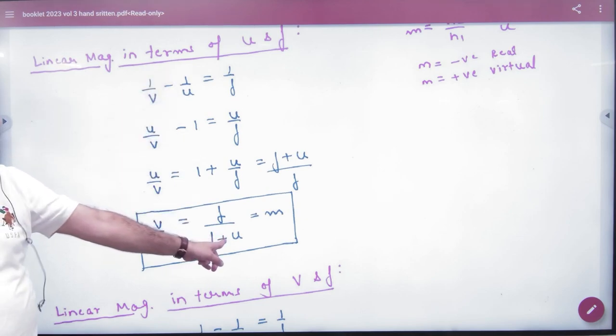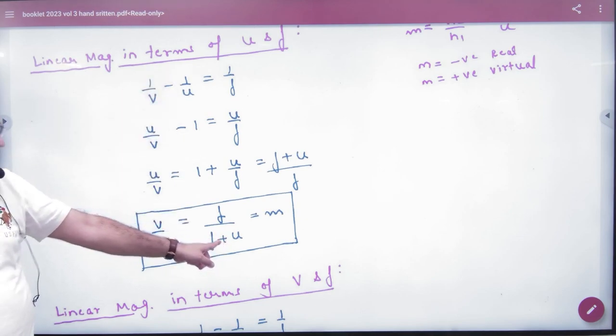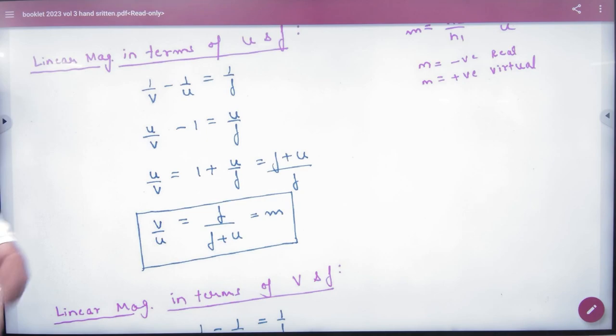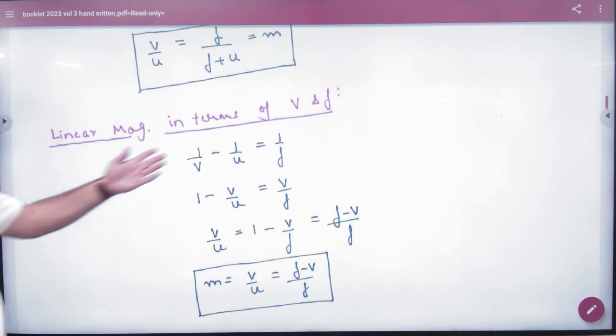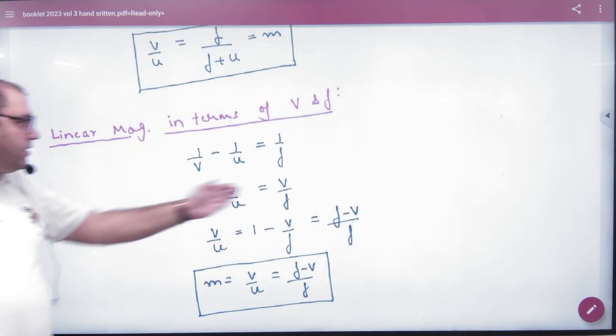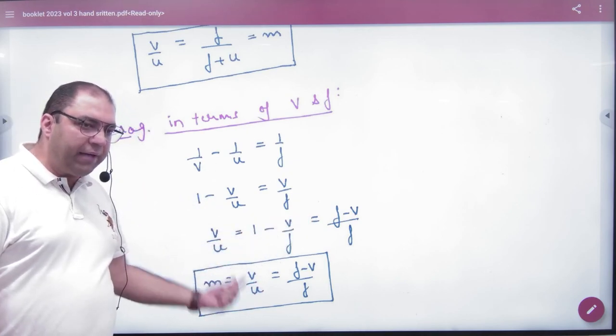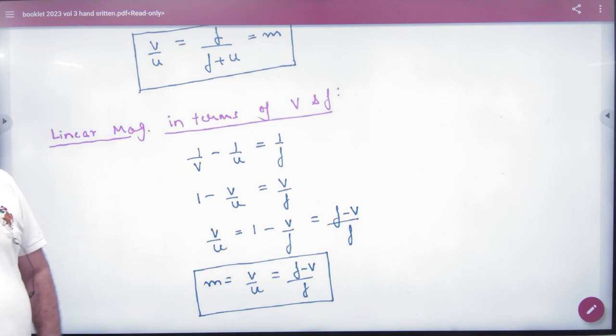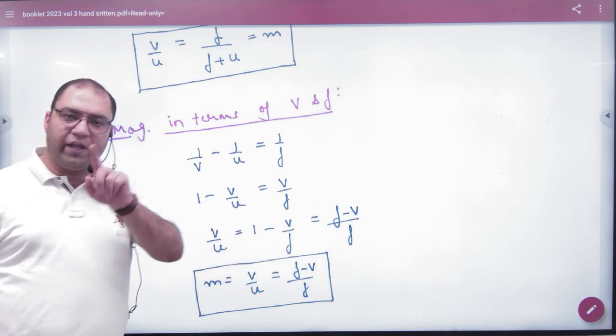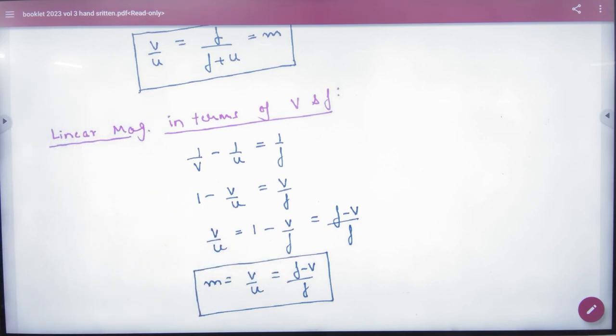So that formula, magnification is F upon F plus U. In that way, another shortcut is that if you write the lens formula, this time you multiply both sides by V. So V by U is magnification, LCM. So note this formula: magnification formula in terms of V is M is equal to F minus V upon F.